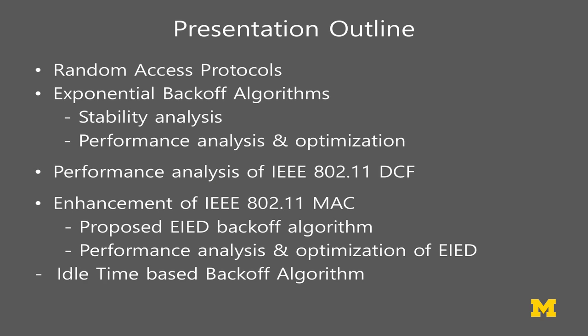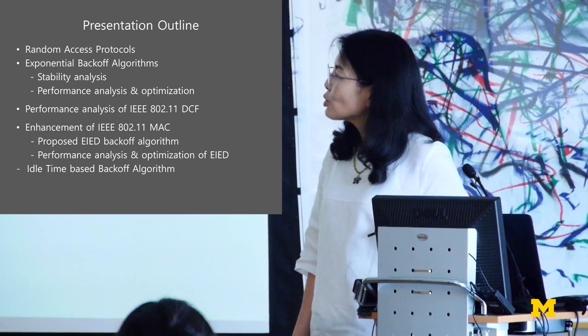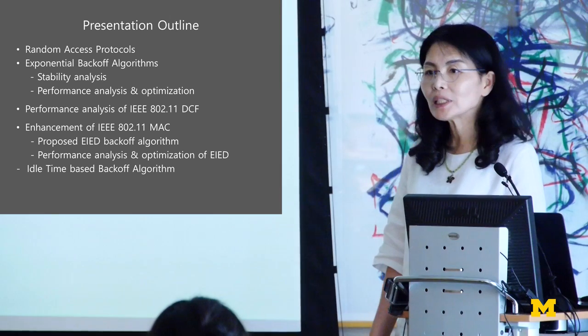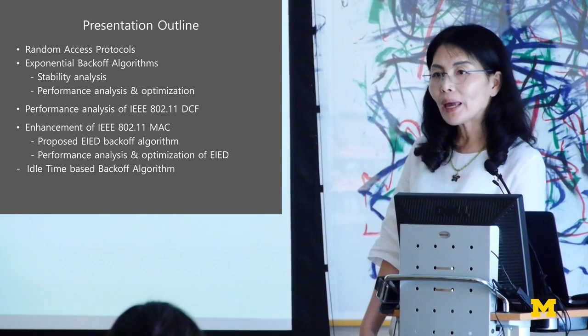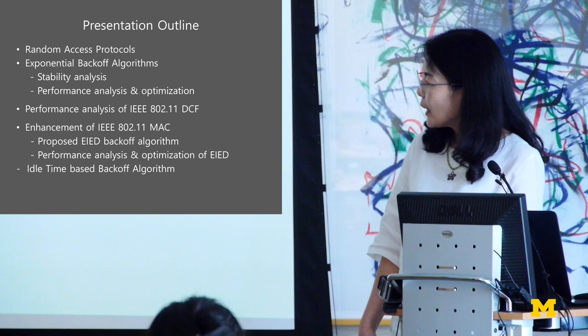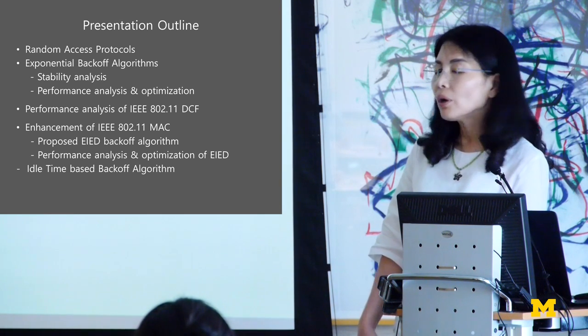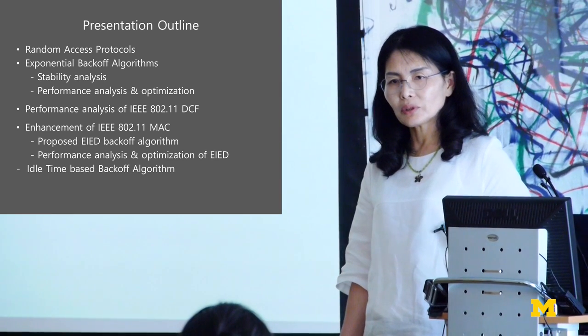I'm going to overview random access protocol, even though everybody here would know, to continue my talk. Then I'm going to talk about the exponential backoff algorithm, which is the main topic, including its stability, performance analysis, and optimization. Using the same analysis technology, I'll show the performance result of IEEE 802.11 DCF, which is Wi-Fi. I'll also try to enhance the IEEE 802.11 MAC with the advanced backoff algorithm, and at the end mention recent work — a different view of the backoff algorithm.